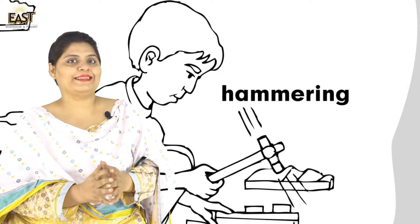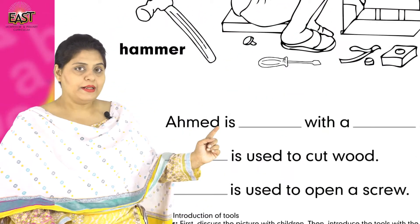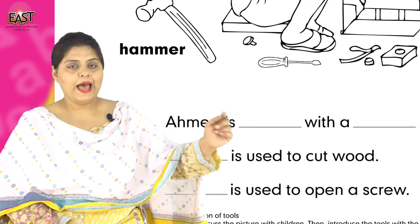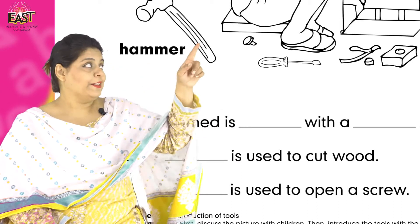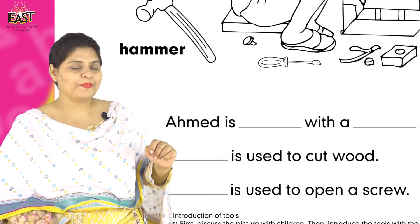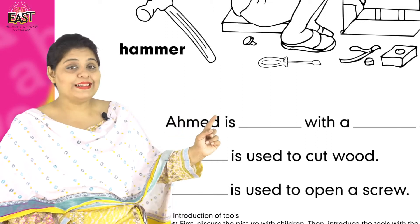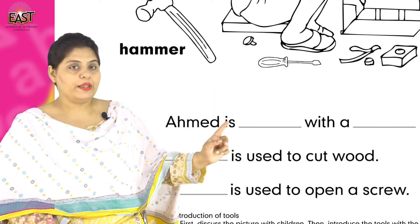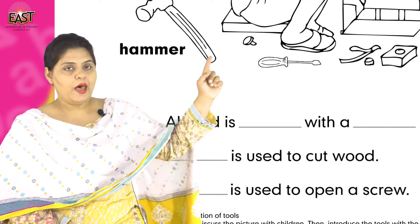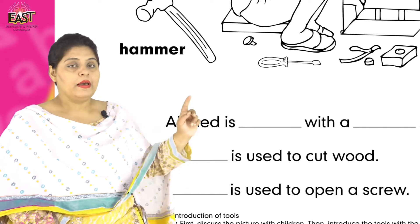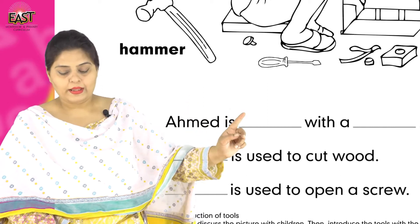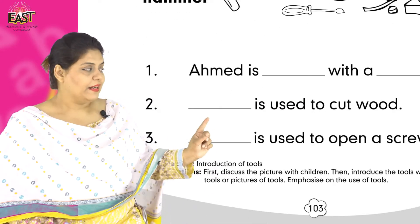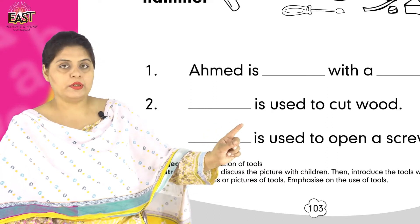Now let's see. What are blanks? Ehmad is dash with a dash. Ehmad is hammering — hammering — with a hammer. Hammer. Ahmed is hammering with a hammer. Well done. Now look at your next blank: dash is used to cut wood.